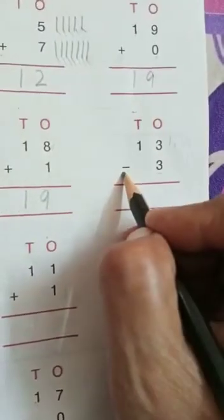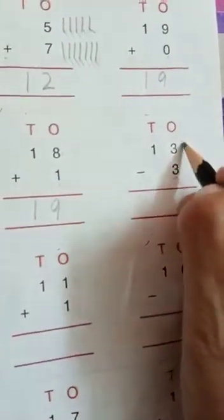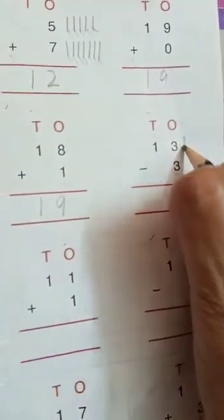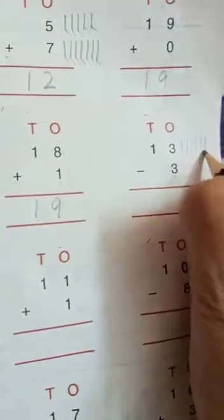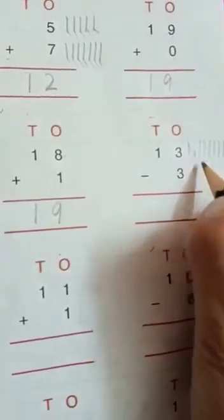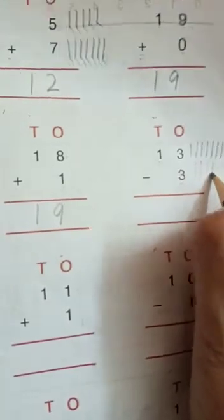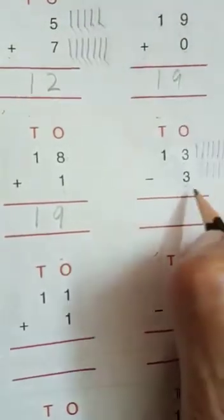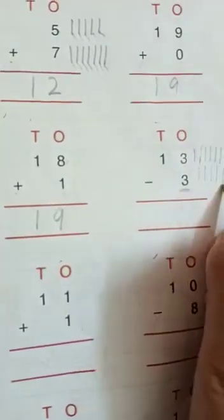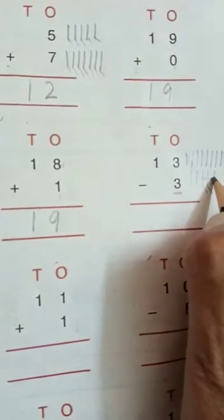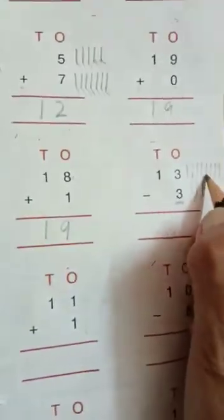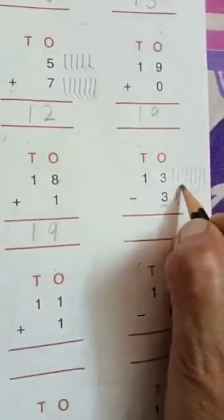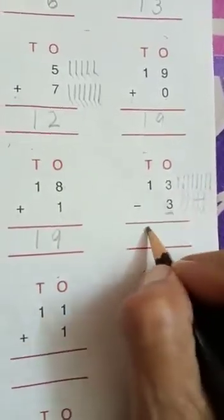Now: 13 minus 3. We will draw 13 lines: 1, 2, 3, 4, 5, 6, 7, 8, 9, 10, 11, 12, 13. And we have to take away 3 lines: 1, 2, 3. How many lines are left? 1, 2, 3, 4, 5, 6, 7, 8, 9, 10. Answer is 10.